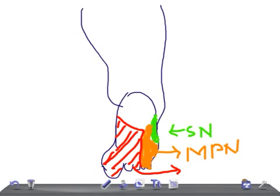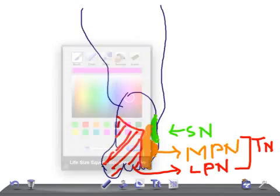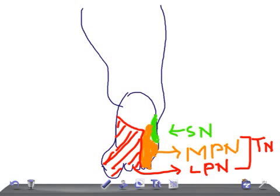The lateral part from here up to this big toe is the lateral plantar nerve — lateral plantar nerve. Together these nerves are known as the tibial nerve. The sole — this, this, this, and this — is supplied by the tibial nerve.